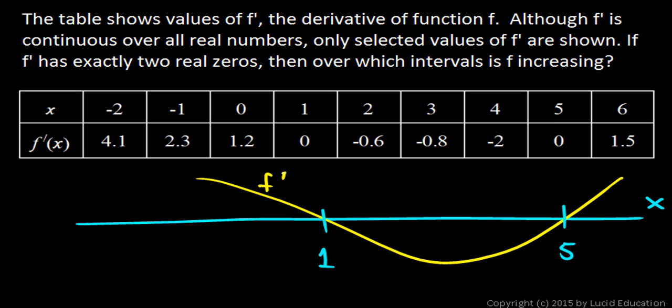And you can see in between these zero values it's negative. And over here to the left of x equals 1, the values of f prime are positive. And over here to the right of x equals 5, the values of f prime are positive.